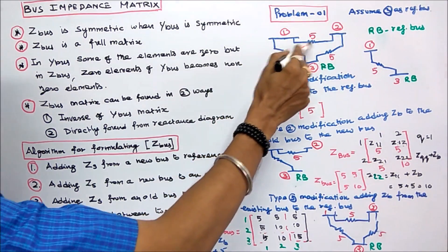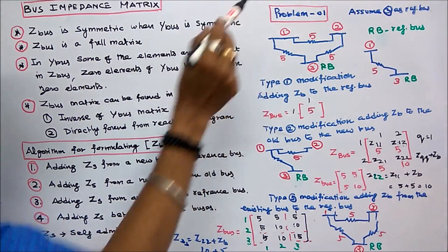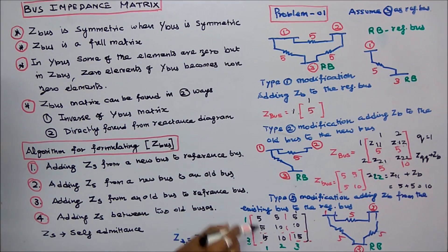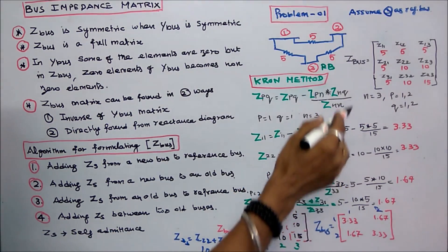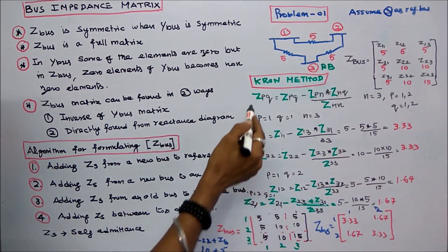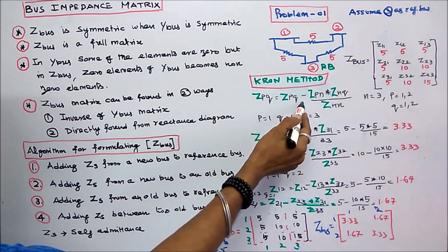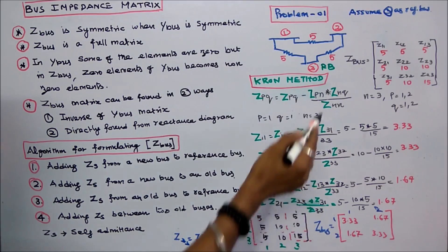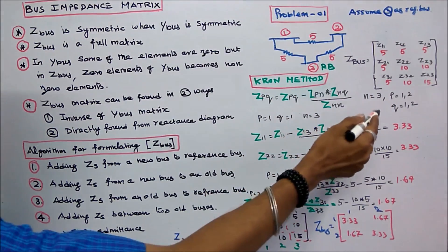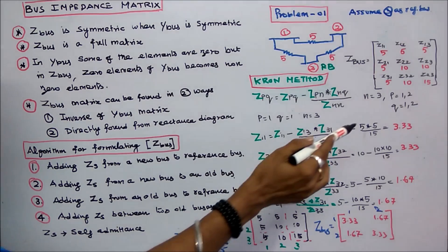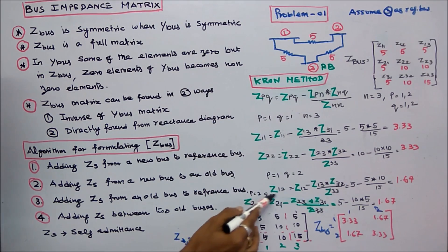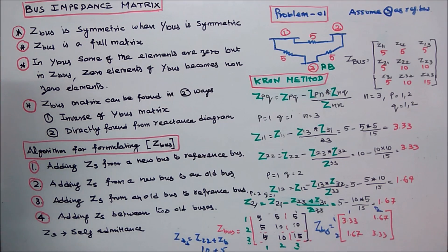From this we can understand the values are the same whether bus 1, bus 2, or bus 3 is taken as the reference — the matrix is the same. We have a 3 by 3 matrix and must reduce it to a 2 by 2 matrix using the Kron reduction method. The formula is: ZPQ_new = ZPQ - (ZPN × ZNQ) / ZNN, where N equals 3, P equals 1 or 2, Q equals 1 or 2. Z11 equals 3.33, Z22 equals 3.33, Z12 equals 1.67, Z21 equals 1.67. After eliminating, Z bus equals [3.33, 1.67; 1.67, 3.33]. This is the Z bus for this system.